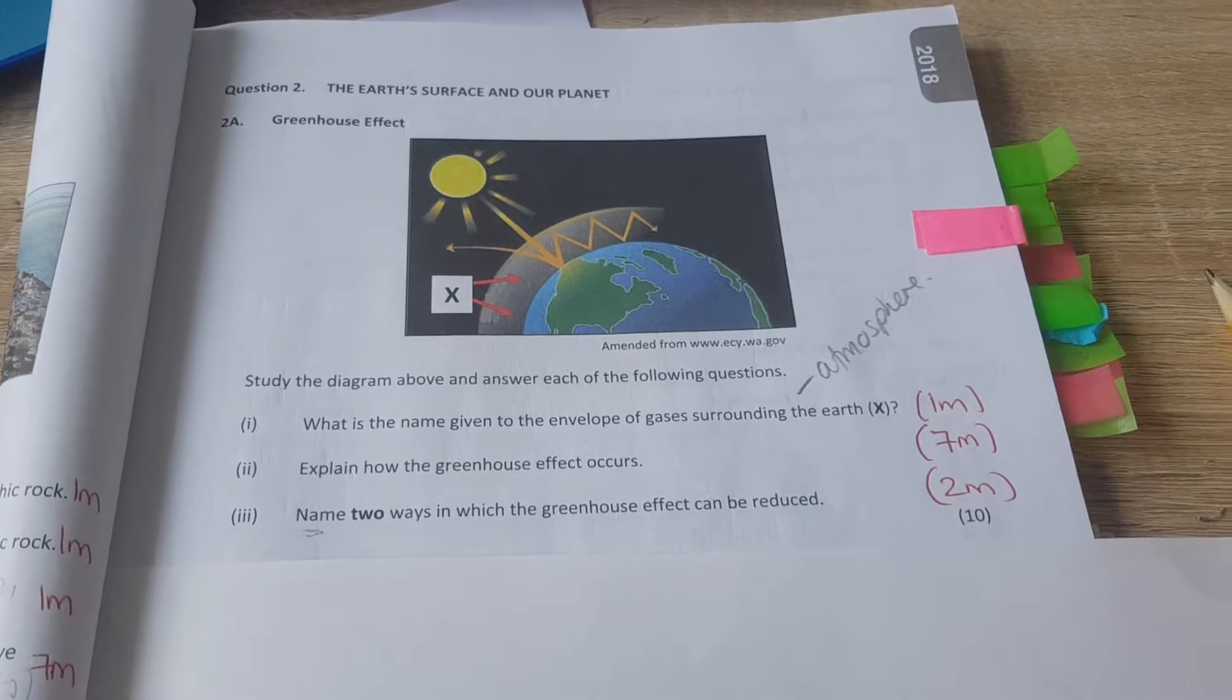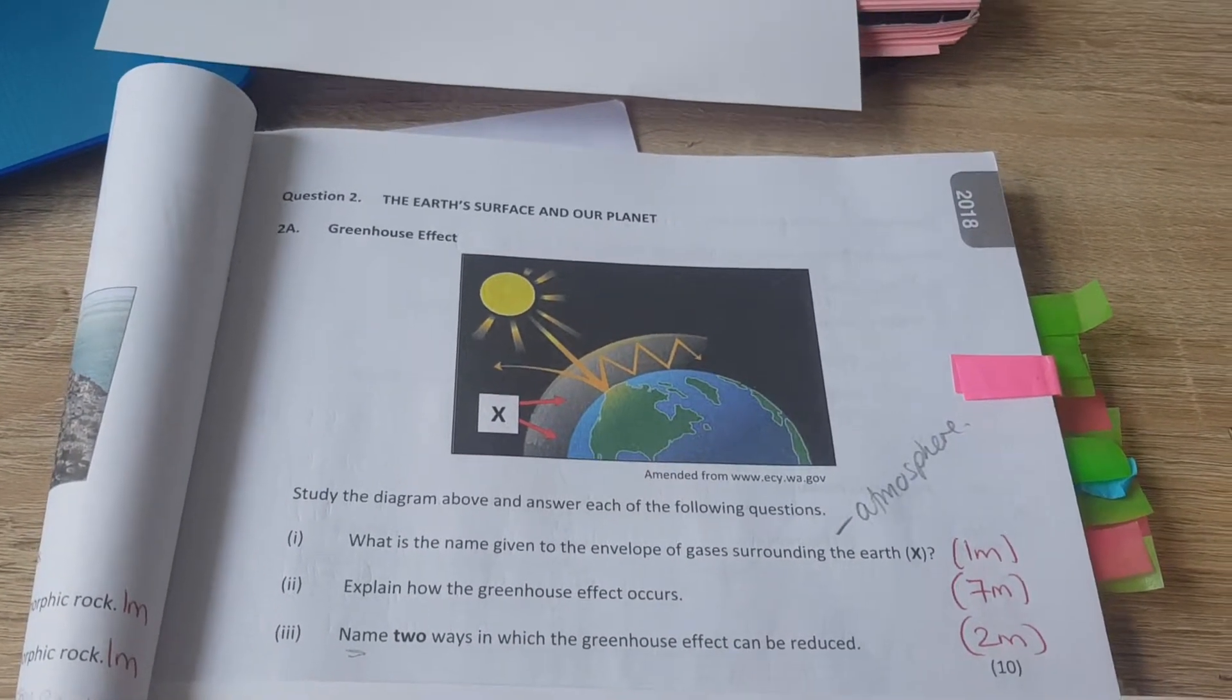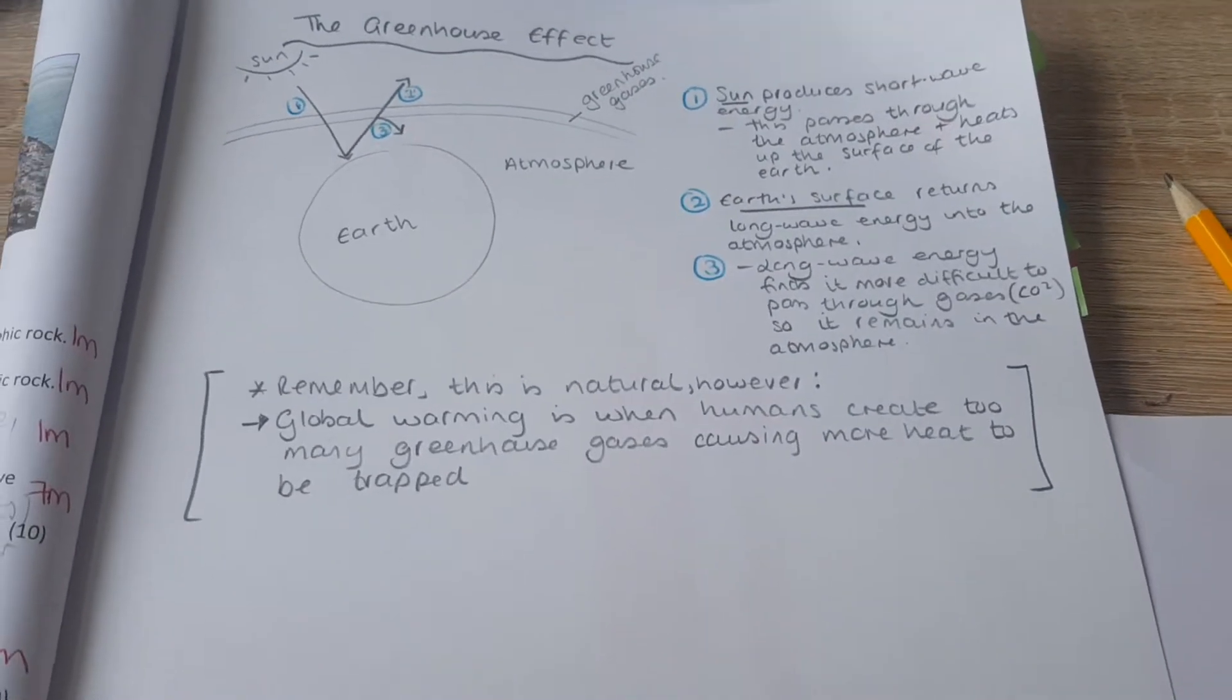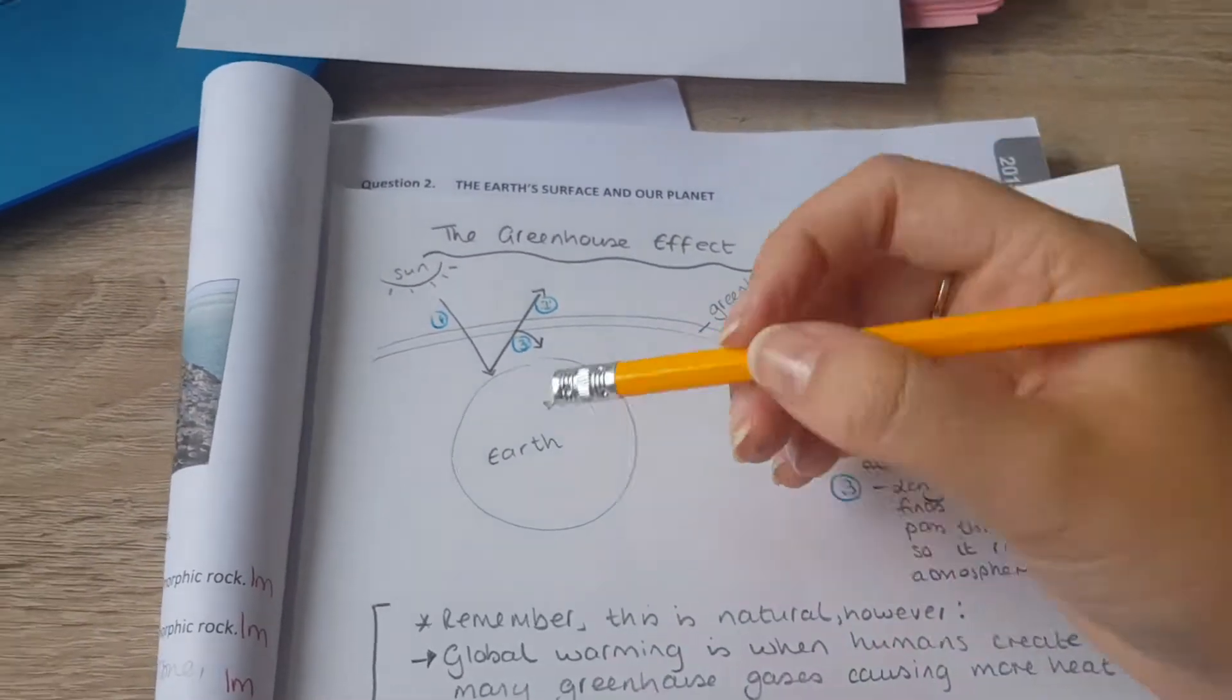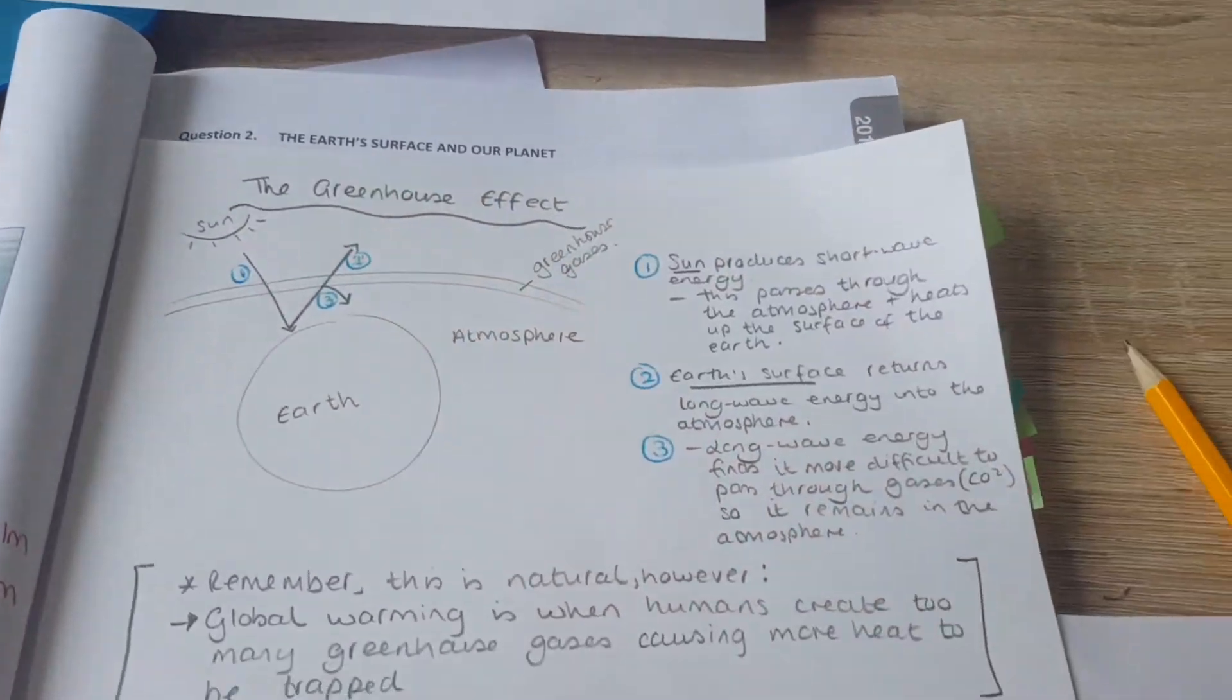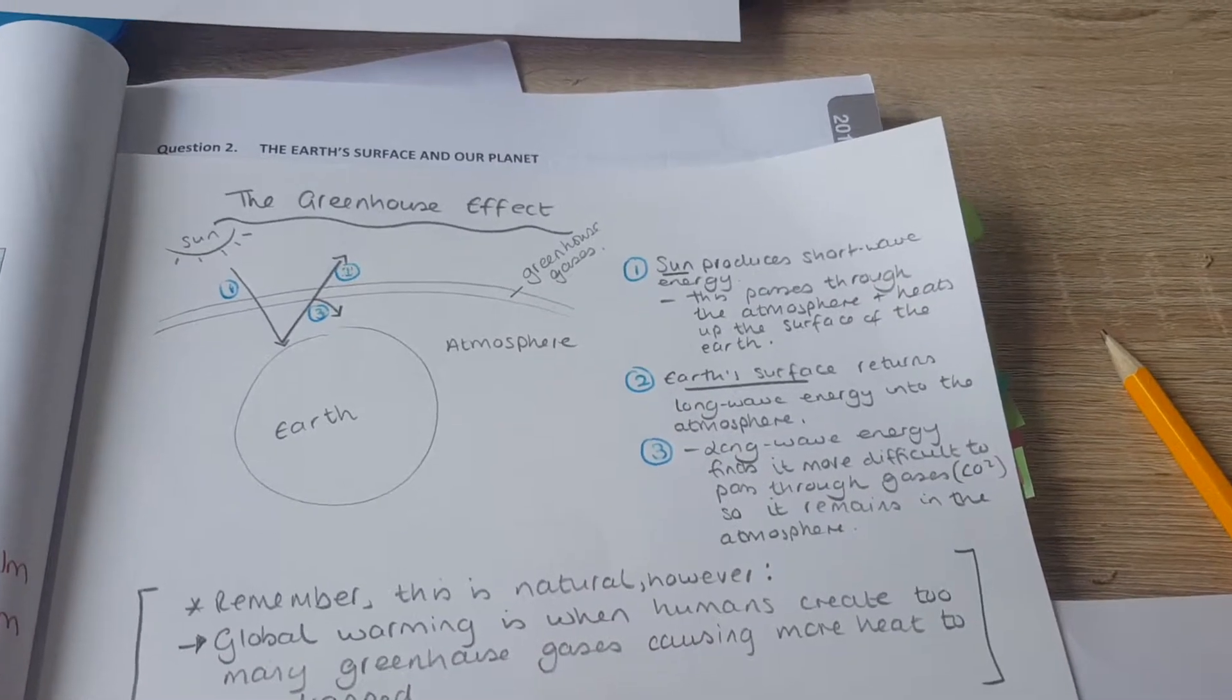Now explain how the greenhouse effect occurs. I'm going to show you something here. I've written out my own answer. There's a diagram there. You're not asked for a diagram, you don't have to give one, but it's up to you. Let's look at it together. I have 1, 2 and 3 here. This is how you answer what is the greenhouse effect and how it actually occurs.